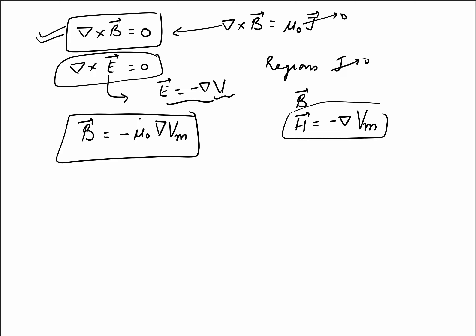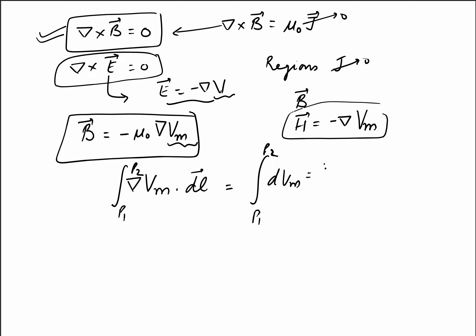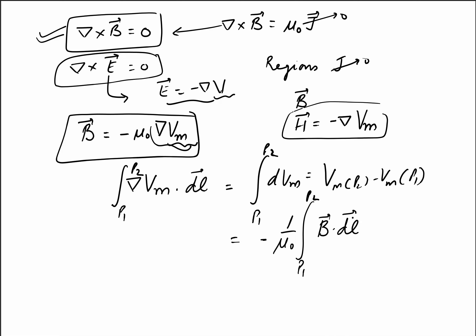Since we have defined this magnetic scalar potential, we can also define the potential difference. The gradient of any scalar quantity dot dL from point 1 to point 2 is simply dVm, so the potential difference Vm at point 2 minus Vm at point 1 equals minus one over mu naught times the integral from point 1 to point 2 of B dot dL.